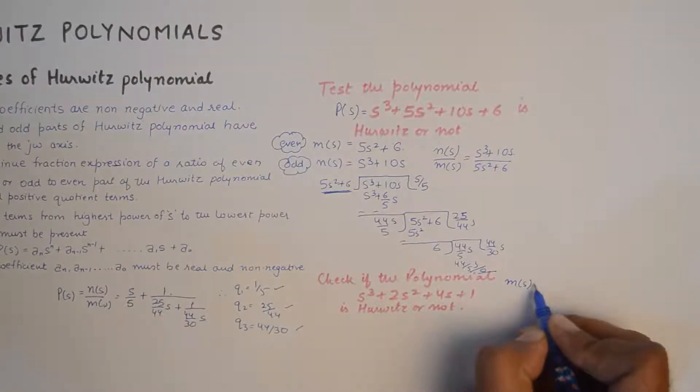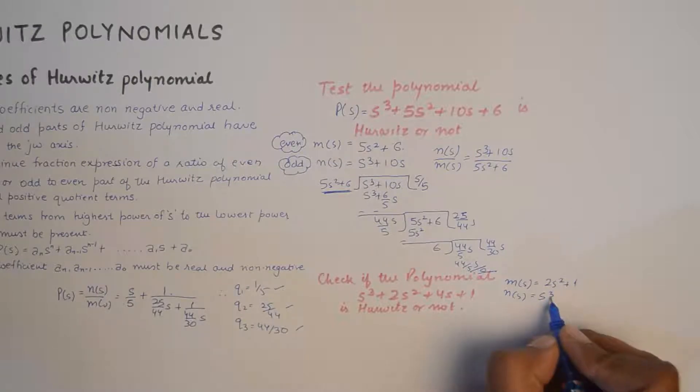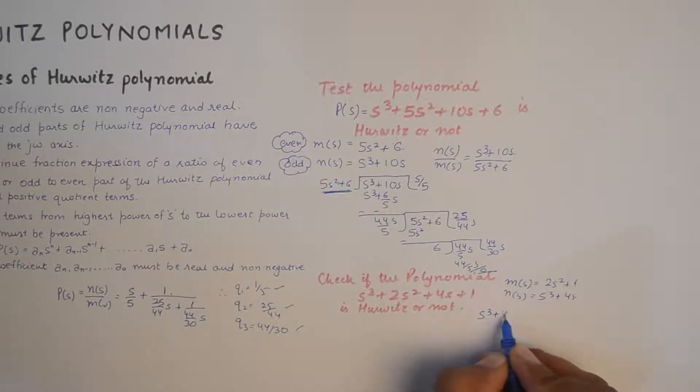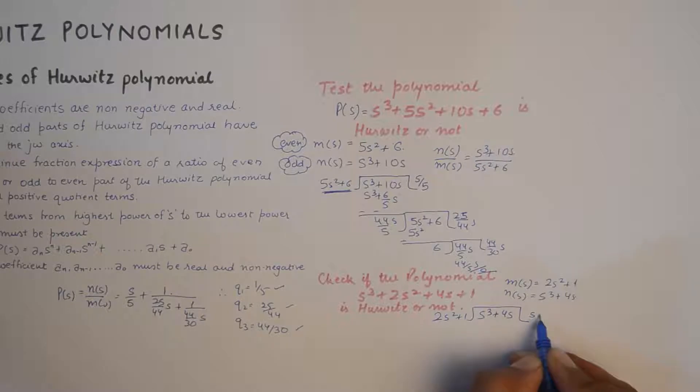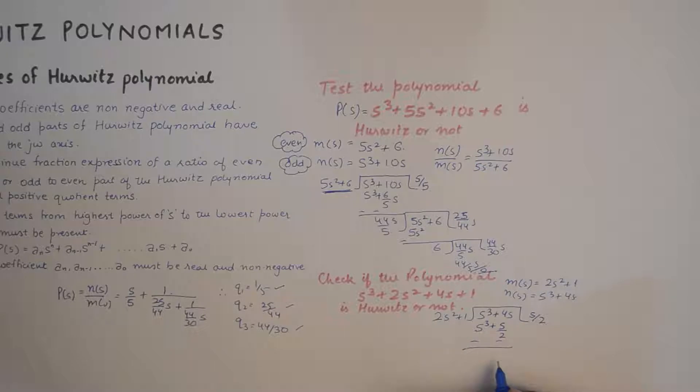Here M(s), which denotes the even part of the polynomial, is 2s squared plus 1. The odd polynomial is s cubed plus 4s. And now in this particular case, I'll again find the ratio of N(s) upon M(s), so I'll say s cubed plus 4s divided by 2s squared plus 1. And the quotient is s by 2 in this case.